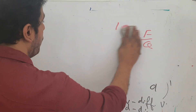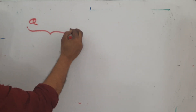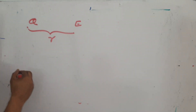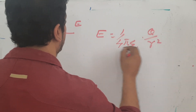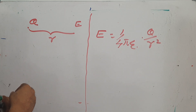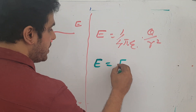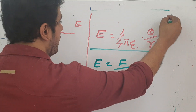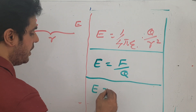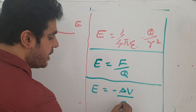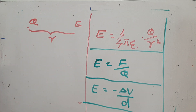Finally, we can write three expressions for E. First, for a static charge Q at distance r: E = 1/(4πε₀) × q/r². Second, E = F/q (here you cannot apply polarity). Third, E = −dV/d, the negative gradient of voltage. These are the three methods to write electric field intensity E.